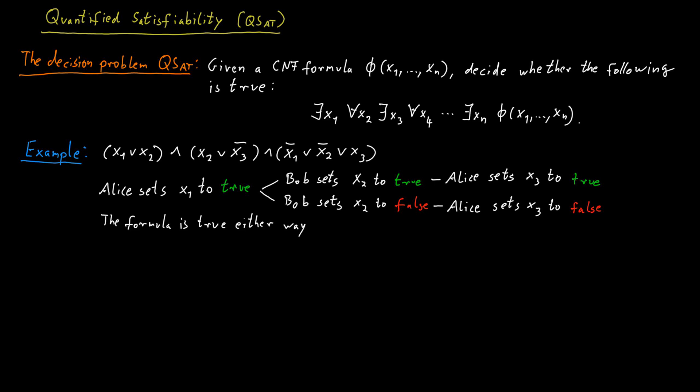If Bob sets x2 to true, that clause will be true. However, if Bob sets x2 to false, then Alice will set x3 to false as well, which also will make the second clause here true. And the third clause will also be true either way.